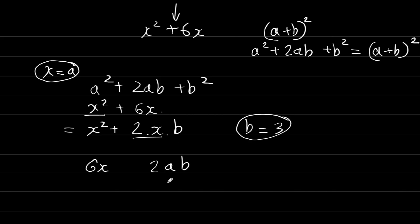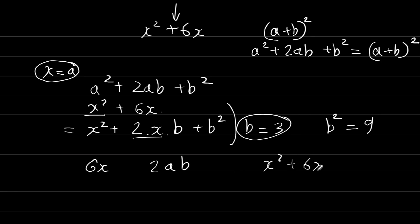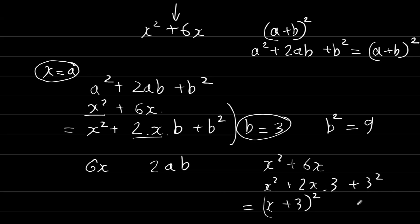Now we find the last term b² of the trinomial. We have x² + 2x·b, and we need to add b². Since b = 3, b² = 9. We can rewrite this completely as x² + 2x·3 + 3², which factors as (x+3)². That is the fundamental theorem about completing the square.